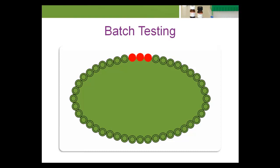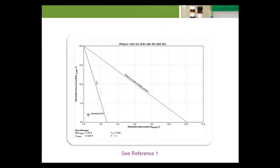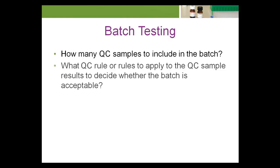In the batch testing setting, there is a natural association between the set of QC samples and the set of patient specimens that make up the batch. For instance, Westgard proposes tools such as Power Function Graphs and Obspex Charts to help find a QC strategy that has a high probability of giving a QC rule rejection when a critical, out-of-control error condition exists. With batch testing, there are two questions that must be answered to define a QC strategy: how many QC samples to include in the batch, and what QC rule or rules to apply to the QC sample results to decide whether the batch is acceptable.